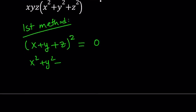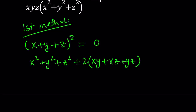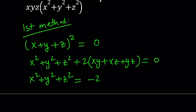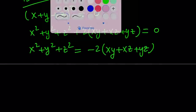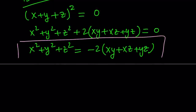x squared plus y squared plus z squared plus 2 times xy plus xz plus yz is equal to x plus y plus z squared. So this equals 0, and from here my goal is to get the sum of the squares. So let's isolate this — that's one of the things I'll be using later on. So let's go ahead and save that for future use. This is the sum of the squares.